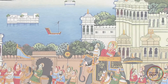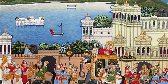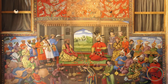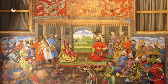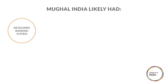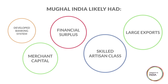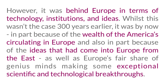Let's begin with the Mughal Empire of the 18th century. Das positions Mughal India as having a developed banking system, merchant capital, a financial surplus, a skilled artisan class, and large exports. However, it was behind Europe in terms of technology, institutions, and ideas.